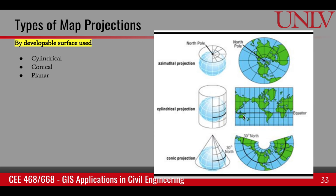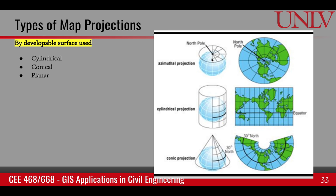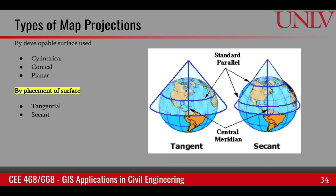There are many types of projections, and they can become confusing. The first classification is based on what developable surface was used: cylindrical if a cylinder was used, conical if a cone was used, or planar if a tangent plane was placed on the surface of the earth and the image was projected.